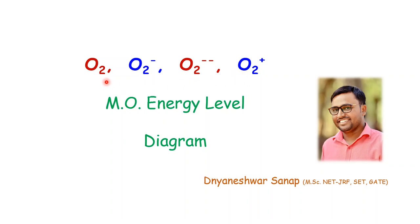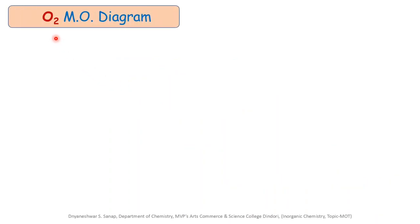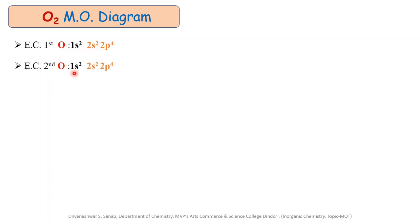First of all, we see the O2 molecular orbital energy level diagram. O2 molecule is formed by the combination of two oxygen atoms together. To understand how this O2 molecule is formed, we have to first understand the electronic configuration of each combining atom. The electronic configuration for the oxygen atom is 1s2, 2s2, and 2p4. Similarly, for the second oxygen atom: 1s2, 2s2, and 2p4. Write this electronic configuration in the tabulated form for both oxygen atoms.